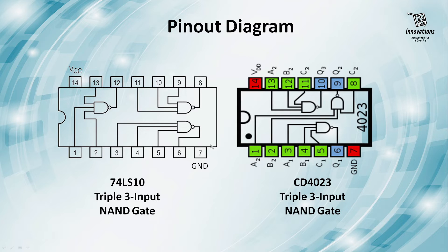In our practical demo, we will only test segment 2, that is input pin numbers 3, 4, 5 and output pin number 6. This pin configuration is the same in both ICs — input pin numbers 3, 4, 5 and output pin number 6 — so we will check this segment only.